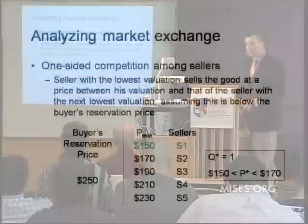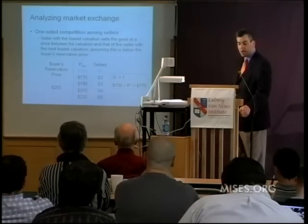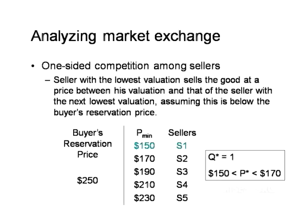Now the reverse case: one-sided competition among sellers. Imagine there's a single buyer — me — but five different sellers on eBay, each with a radio for sale. The most I'm willing to pay is $250. We arrange sellers from the most capable — lowest reservation price — to the least capable. S1 would take anything more than $150, S2 requires at least $170, and so on. Given that I'm willing to pay as much as $250, competition among sellers assures that the equilibrium price will be no lower than $150 and no greater than $170. One radio will be purchased at a price somewhere between $150 and $170.